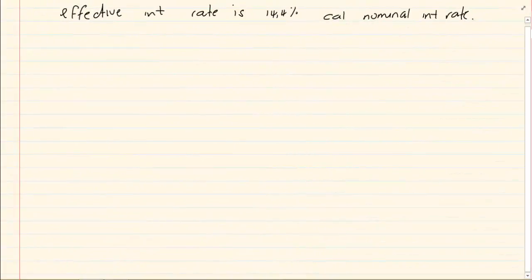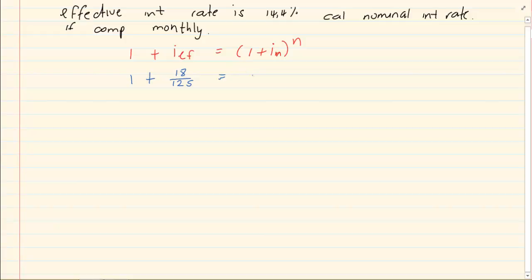The effective interest rate is 14.4%. Calculate the nominal interest rate if it was compounded monthly. So the formula is the same. Our substitution, we are going to have 1 plus 14.4 divided by 100 which is 18 over 125 is equal to 1 plus i to the power of, since it is monthly, our n is going to be 12. Now it is a matter of algebra.